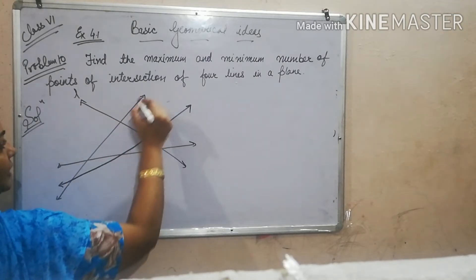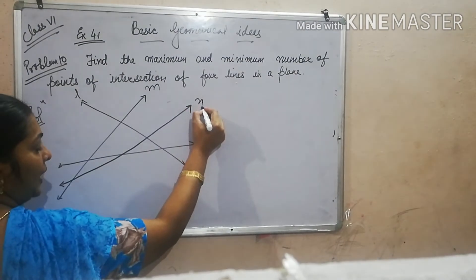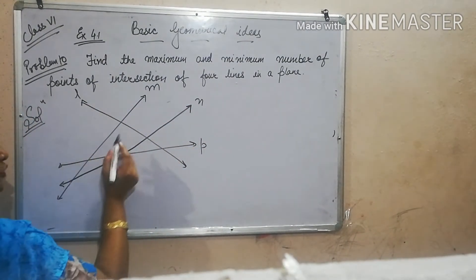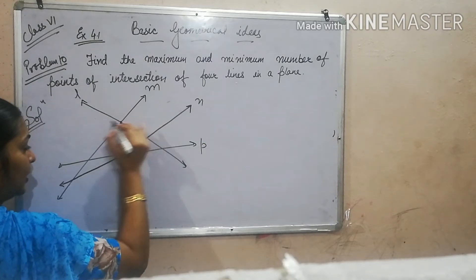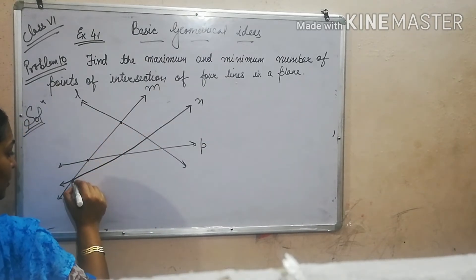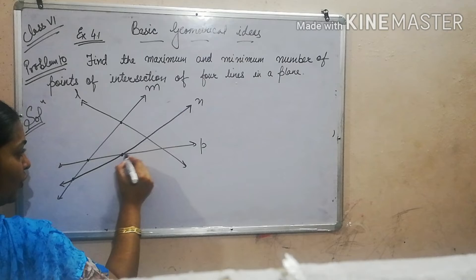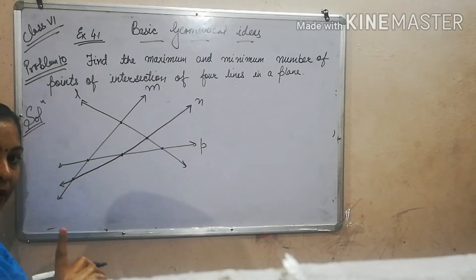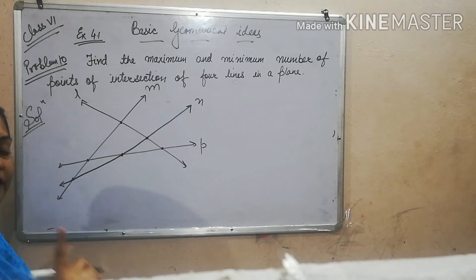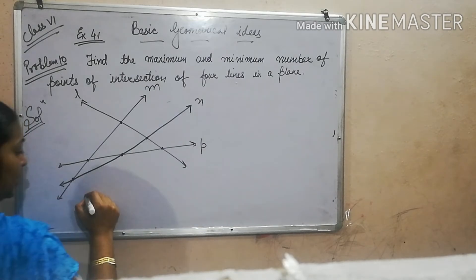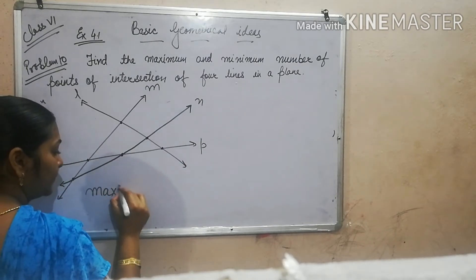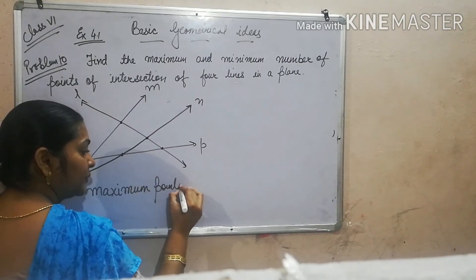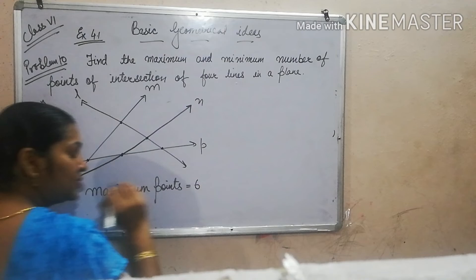Let me name the lines: L, M, N, P. So these are the four lines whose points of intersection are one, two, three, four, five, six. So in maximum we get six points of intersection. Maximum points is equal to six.